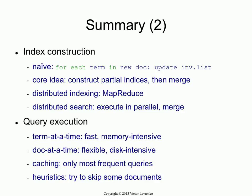We talked about query execution techniques: term at a time is fast but you need memory to store the array. Document at a time is a lot more flexible with more heuristics available, and it is disk-intensive if the indices are stored on disk — it's not as fast as term at a time, but there are more heuristics available so you might actually be able to get document at a time to perform faster. Caching you only really do for very frequent queries because there are better ways in which you could use your cache.